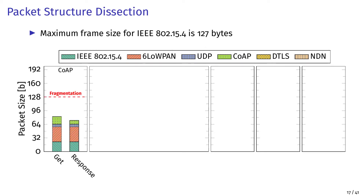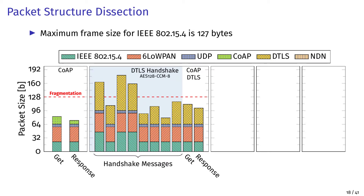For CoAP without security, we observe a MAC header of 28 bytes, IPv6 with 6LoWPAN uses 35 bytes, the UDP header consumes 6 bytes, and the CoAP request uses 18 bytes. For the response, the CoAP part reduces from 18 bytes to 9 bytes, since responses use a 2-byte token instead of the resource endpoint URI. CoAP over DTLS introduces eight new message types for the DTLS handshake, three of which exceed the maximum frame size and need fragmentation. The request and response messages of CoAP both increase by 26 bytes due to the added security.